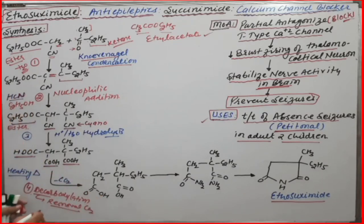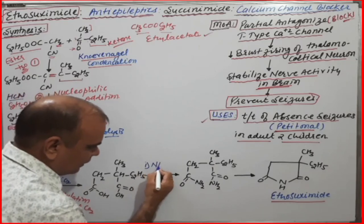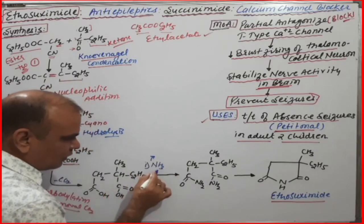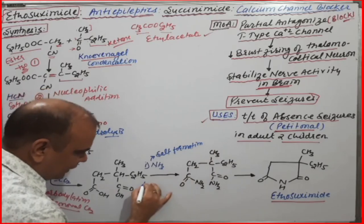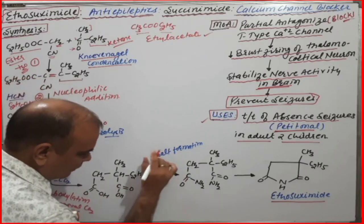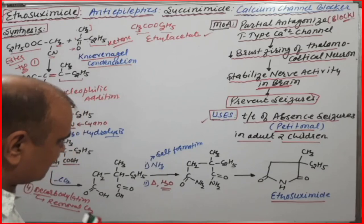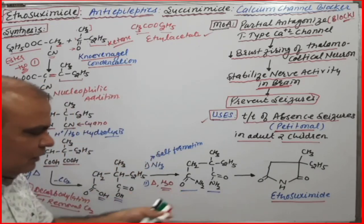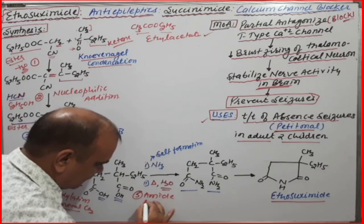The dicarboxylic acid derivative is then reacted with ammonia. The carboxylic groups react with ammonia to form an ammonium salt — this is salt formation. In the next step, heating causes removal of water molecules, converting the ammonium salt into amide groups. This is reaction five: amide formation, giving a diamide derivative.